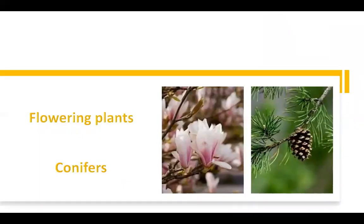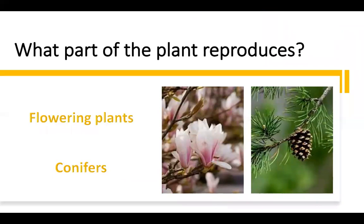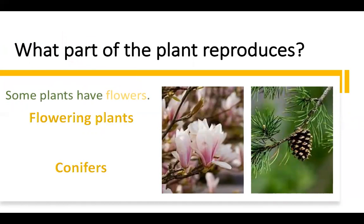There are different kinds of plants. What parts of the plant reproduce? Different kinds of plants reproduce with different structures. Some plants have flowers and make seeds inside their flowers. Other plants have cones and make the seeds inside the cones. The ones that have flowers we call flowering plants, and the ones that have cones we call conifer plants. Here in this picture we have two kinds of plants: the flowering plants and the conifers.